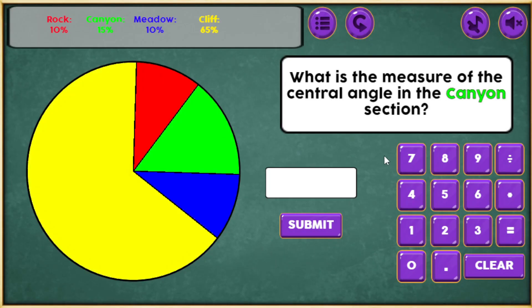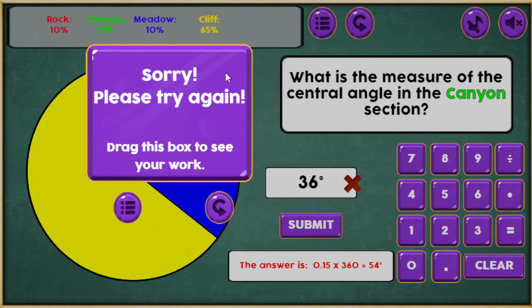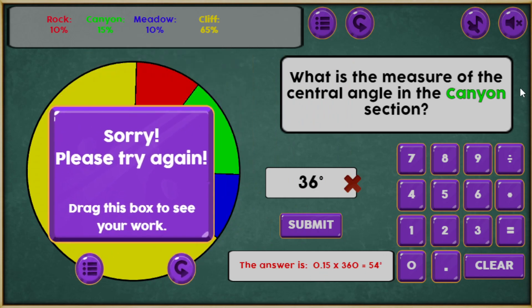Let's go ahead, now it's saying, what is the measure of the central angle in the canyon section? 15 percent. Let's go ahead and actually put in 10 percent times 360, which is wrong. Submit, and it says, sorry, please try again. And it tells you that the answer is canyon is 15 percent. So the answer is 0.15 times 360 equals 54 degrees, and that's what the answer should have been.